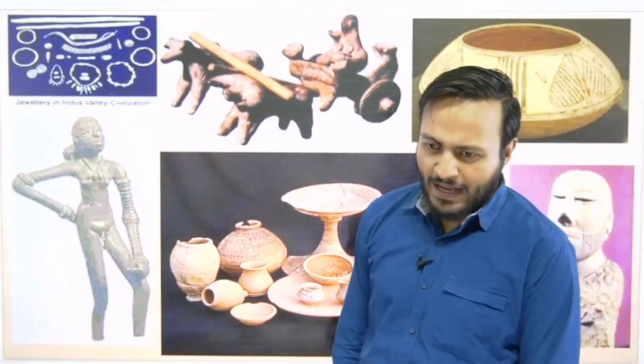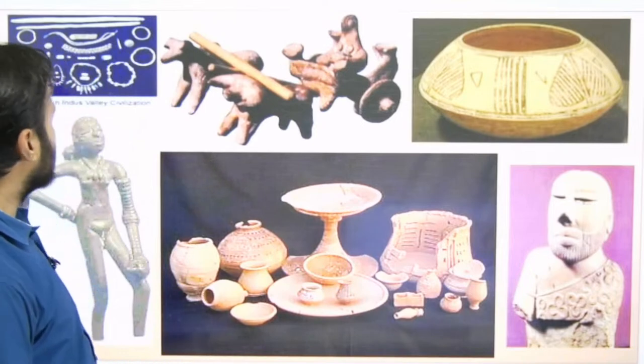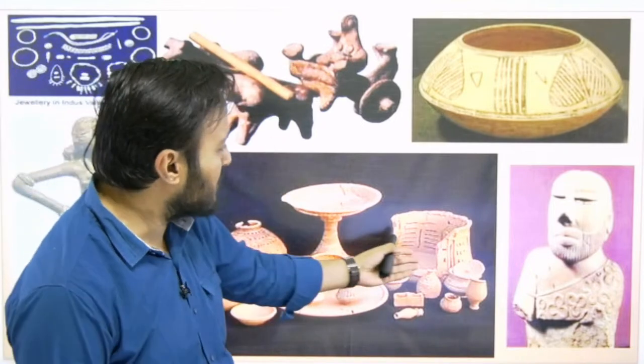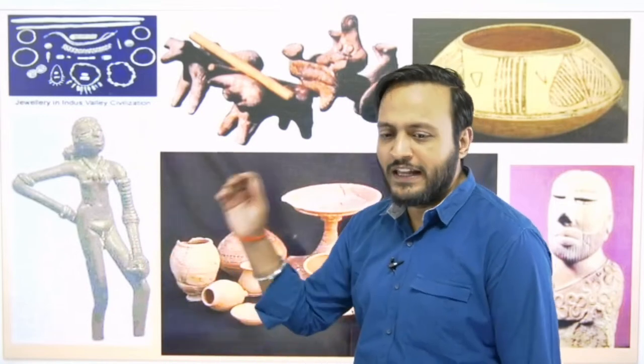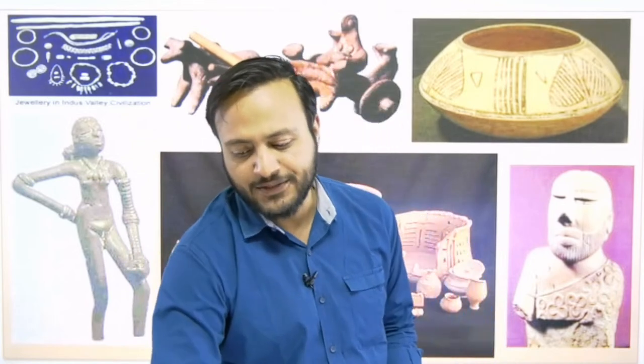Now, looking at this picture — most of you might recognize this is a bullock cart and these are the potteries obtained from Harappa. On the right you can see the very famous bronze statue of the dancing girl, and on the left is the steatite statue of the priest of Mohenjo-daro. It is assumed to be a priest, but nobody knows exactly — we're not certain if this was a dancing girl or a priest.